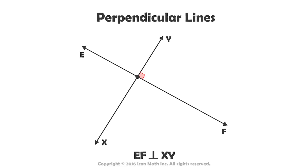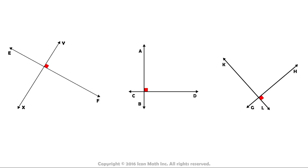Look at these intersecting lines. All of them form right angles. Therefore, all of them are perpendicular lines.